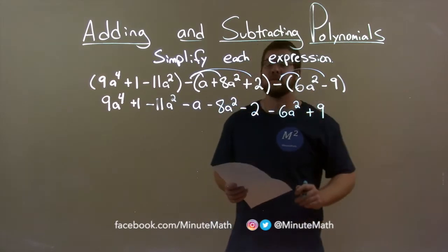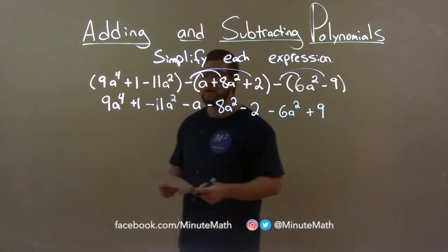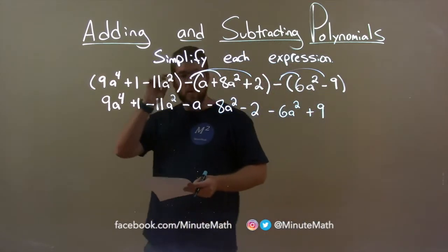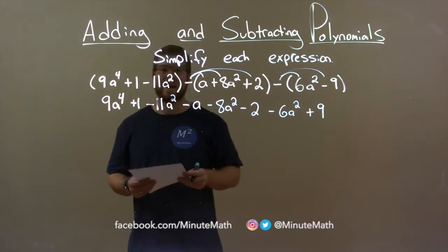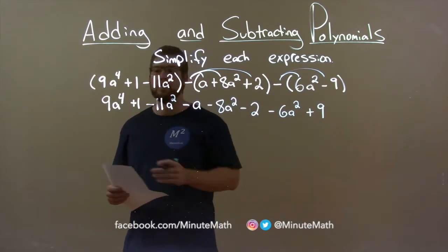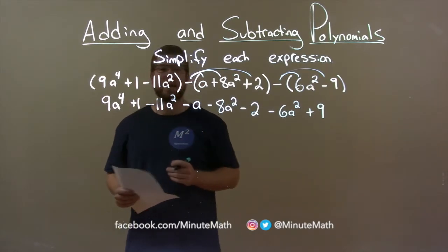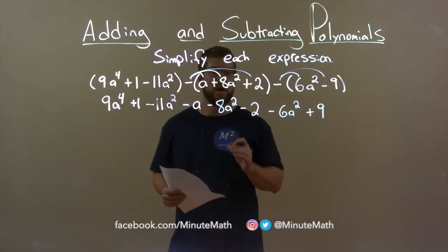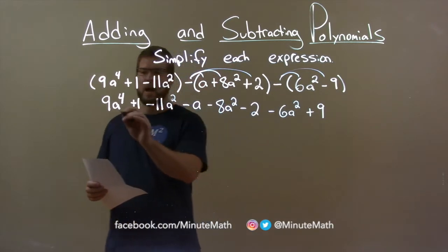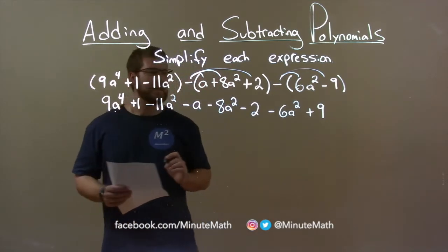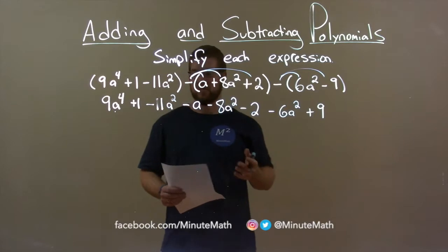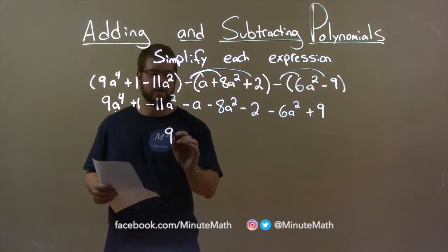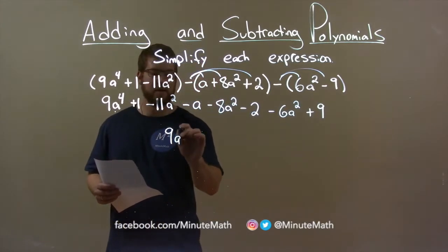And minus times a minus 9 is a positive 9. Remember, negative times a negative is a positive. So now I want to combine my like terms, and let's start with our highest degree. The highest degree is 9a to the fourth power. I put a dot underneath to show that I'm going to bring it down. I don't see anything else to the fourth power, so it just comes down here: 9a to the fourth.